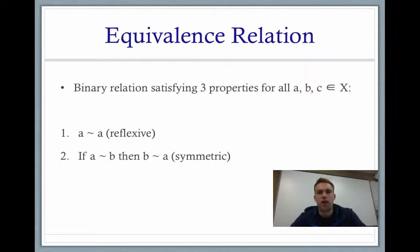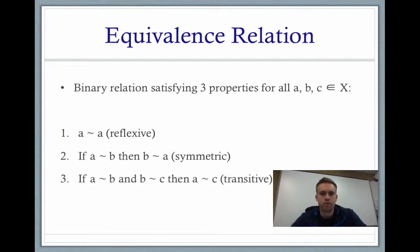Our second property is the symmetric property, where for all A and B in the set X, if A is equivalent to B, then B is going to be equivalent to A. And our third property is the transitive property, where if A is equivalent to B and B is equivalent to C, then A is going to be equivalent to C.